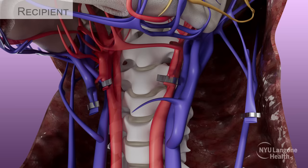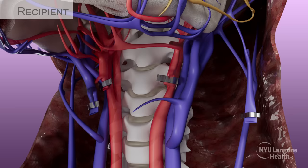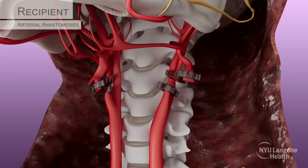Using the operating microscope, the donor jugular veins were anastomosed end-to-side with that of the recipient. Recipient external carotid arteries were also anastomosed end-to-end with donor carotids, ultimately restoring perfusion and drainage of the allograft.